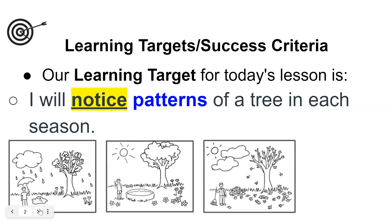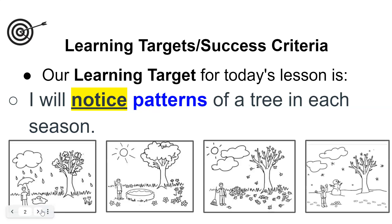And then we have fall where the leaves are falling off the tree and all over the ground. And then we have winter where there are no leaves around and no leaves on the tree.